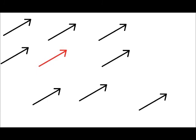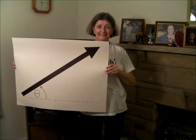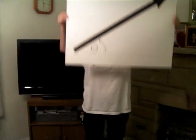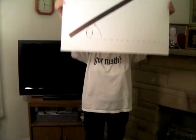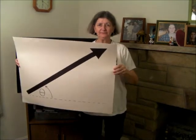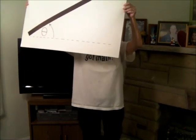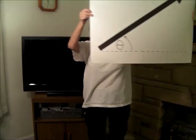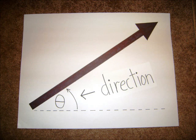A vector is allowed to move, change its stop and start. It must not change its length or the angle that it makes. It must maintain its essence, the same path delineate.